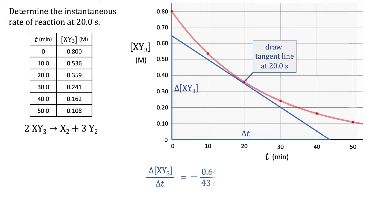Change of XY₃ with respect to time for our tangent line, which corresponds to the instantaneous slope and instantaneous rate of change of XY₃, is 0.64 molar over 43 minutes. Note that the line slopes negatively, so we have a negative sign out in front. This corresponds to initial time of zero, final time of 43 minutes, initial concentration of 0.64, and final concentration of zero.